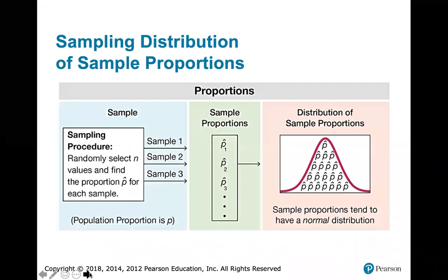In chapter 7, section 7.1 in particular, we're talking about estimating a population proportion p. A critical component of that is looking at the distribution of the sample proportions. We talked about sampling distributions back in chapter 6.